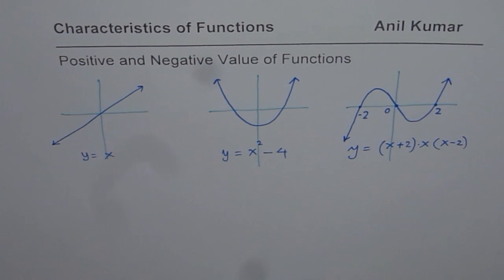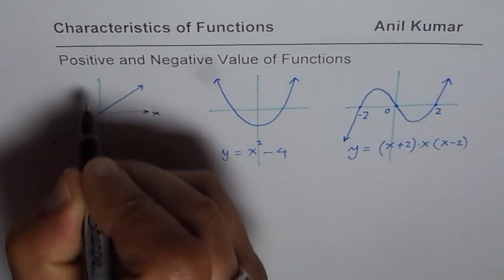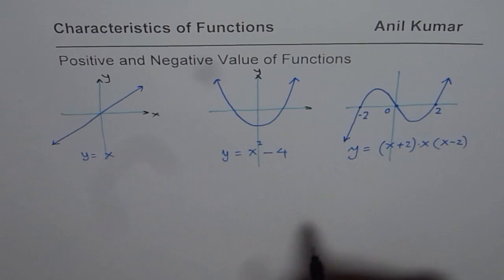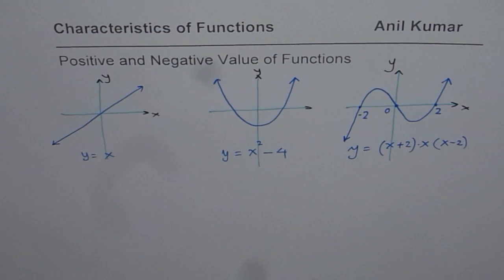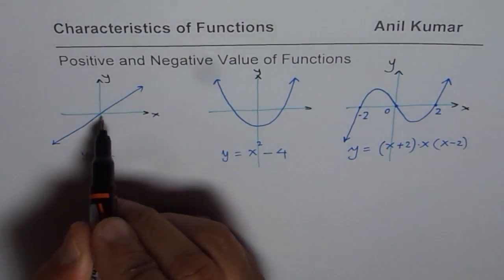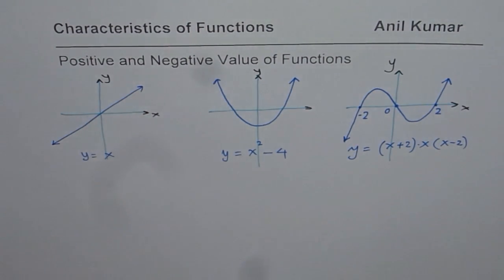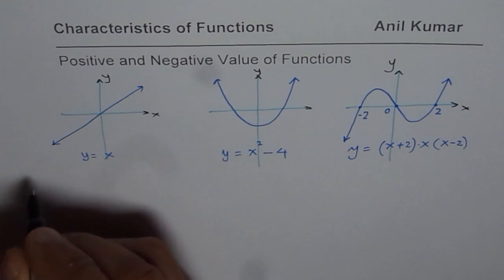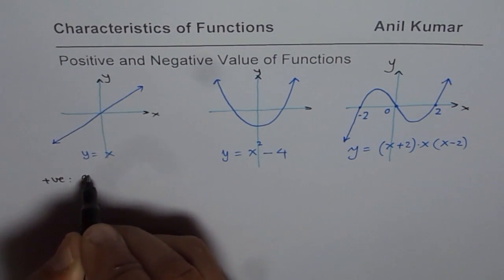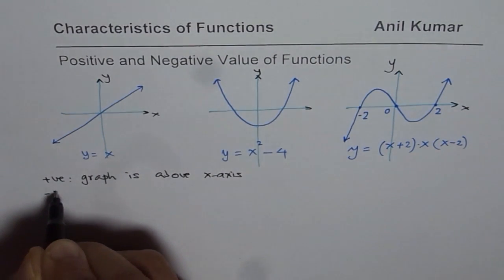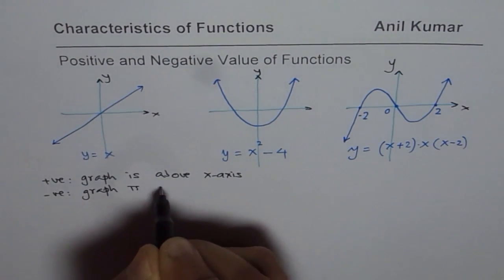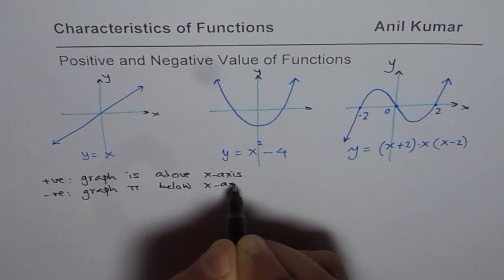The question for you is: when are these functions positive and when are they negative? This is your positive x-axis and that is positive y. You can pause the video. For this cubic function, we need to write when the function is positive and when it is negative. Positive means the graph is above the x-axis, and negative means the graph is below the x-axis.